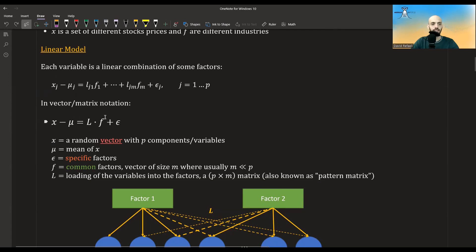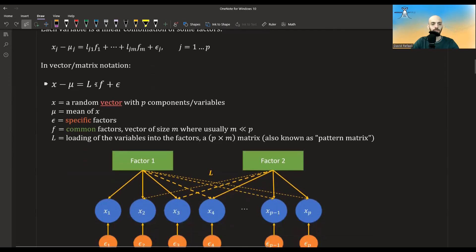In vector or matrix notation, we would write it like this. X minus mu is equal to L dot F plus epsilon. X is, in this case, a vector with P components or variables. Mu is the mean of X. Epsilon is the specific factor.